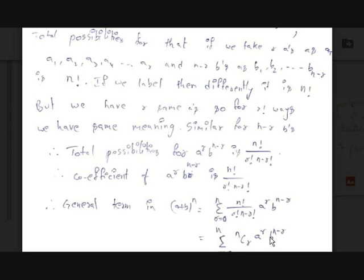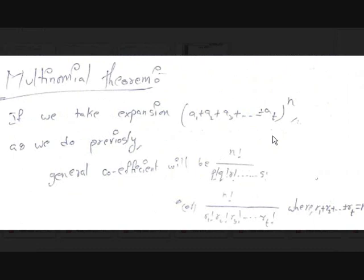Now we have sufficient knowledge to enter the multinomial theorem. Before, we saw (a+b)^n. Now let's see how to expand a1+a2+a3+...+at — a total of t terms — raised to the power of n. You can call this a t-nomial, or generally a multinomial since t can vary. As we discussed, the general coefficient here is n!/(r1!·r2!·r3!·...·rt!).